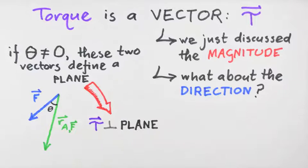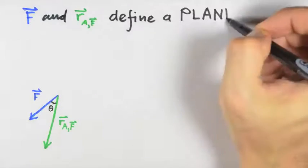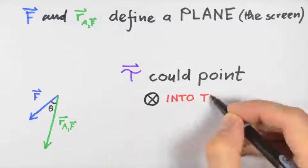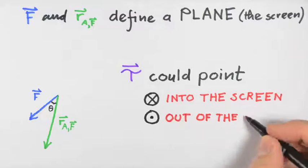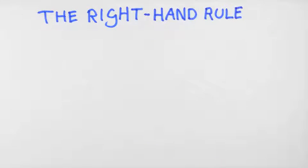The direction of the torque is perpendicular to this plane. There are two possibilities: either out of the screen toward us or into the screen away from us. There is a rule called the right-hand rule which tells us which of these directions is the direction of the torque.